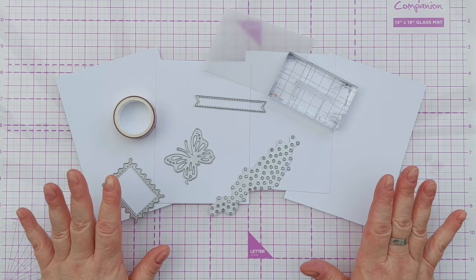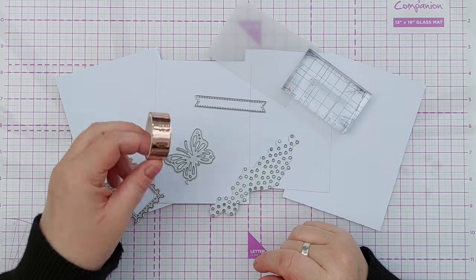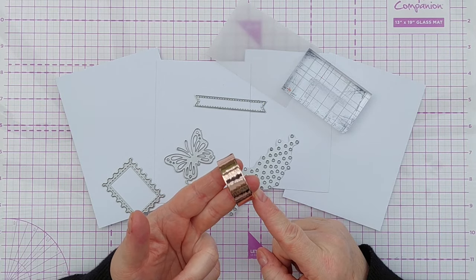I've got some smooth white cardstock, several dies, a sentiment stamp, a bit of vellum and some rose gold washi tape.